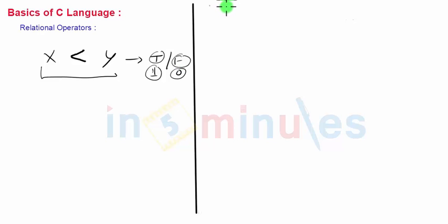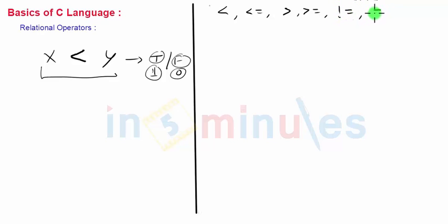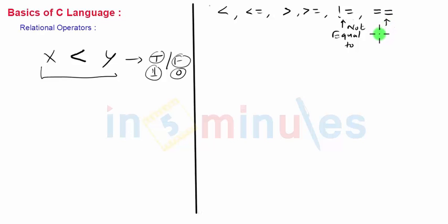The relational operators in C are: less than (<), less than or equal to (<=), greater than (>), greater than or equal to (>=), not equal to (!=), and equal to (==). The not-equal-to operator is written as exclamation-equal (!=), and the equality comparison is written as double equal-to (==). These last two are also called equality operators because they check the equality of two values.